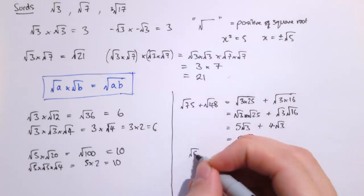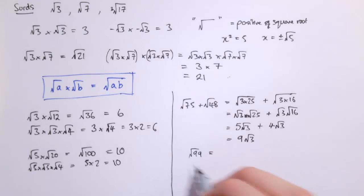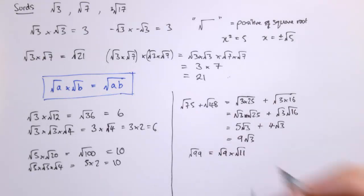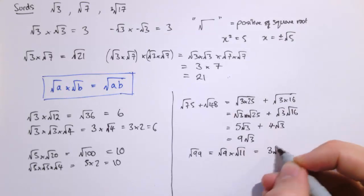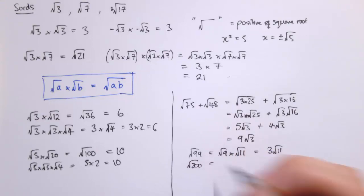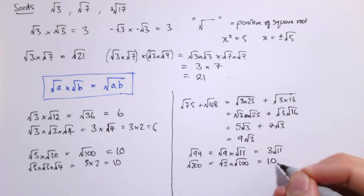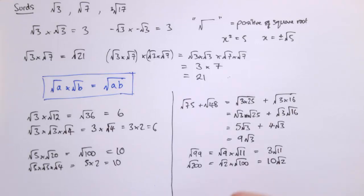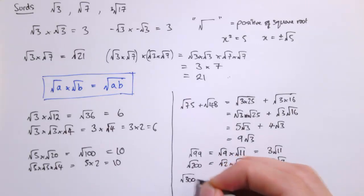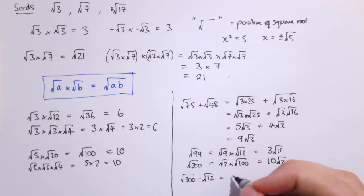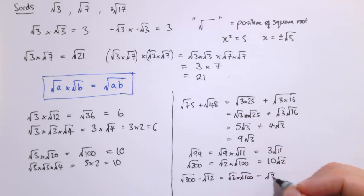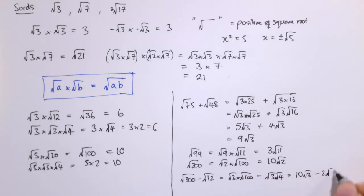A couple more examples. Root 99 = root 9 times root 11 = 3 root 11. Root 200 = root 2 times root 100 = 10 root 2. For root 300 minus root 12: root 300 = root 3 times root 100 = 10 root 3, and root 12 = root 3 times root 4 = 2 root 3. So root 300 minus root 12 = 10 root 3 minus 2 root 3 = 8 root 3.